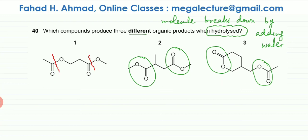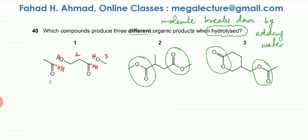Removing those bonds, the double bond O side turns into a carboxylic acid — it becomes C=O and OH — and the single O side turns into an alcohol. Over here as well, this changes into an OH, forming an alcohol. You can see that one, two, and three different products are being formed. So option one is correct — it produces three different organic products.